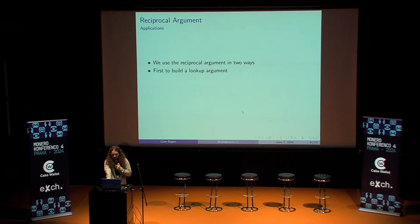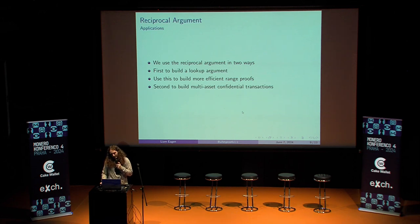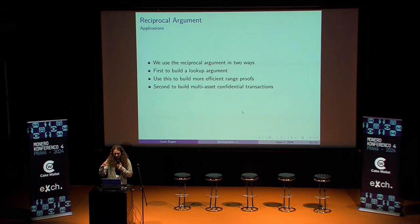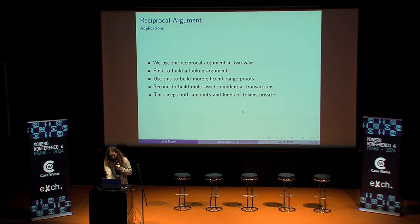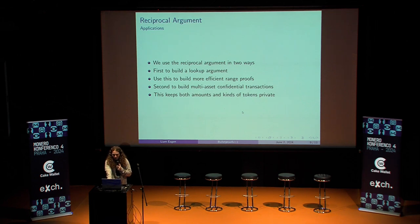First, we build a lookup argument, which allows us to build a more efficient range proof. We also use it to make multi-asset confidential transactions. Confidential transactions hide internal information — the simplest kind being amounts. But maybe we also want to have multiple types of asset in one transaction, which turns out to be a little tricky. The reciprocal argument is a really nice way to do that, and it keeps all the relationships between the assets, the amounts, and how many assets there are private — up to the structure of the transaction, so if you have two inputs and two outputs, you can't possibly have more than four assets.